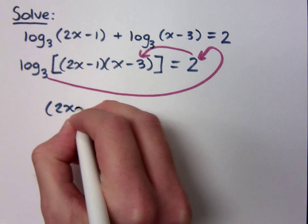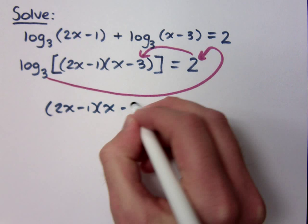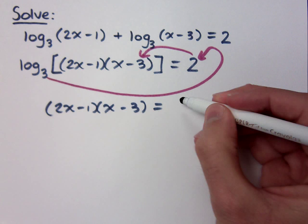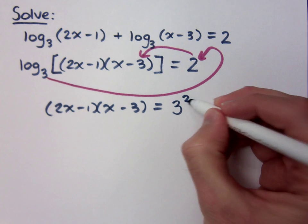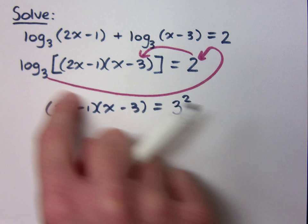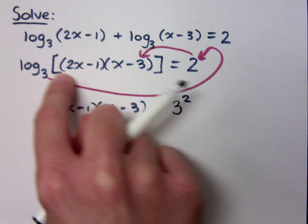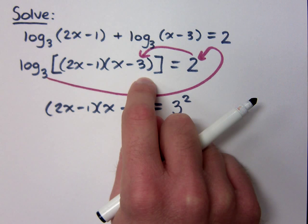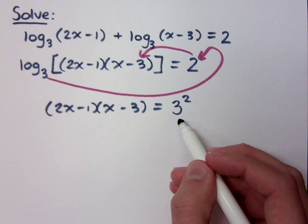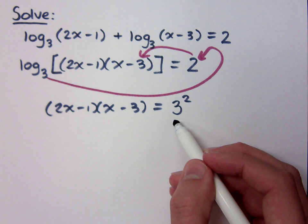So that means that 2x minus 1 times x minus 3 is equal to what? Want to do the loopy-loo? That equals 3 squared, right? That was the way we did the loopy-loo, when I was going from a logarithmic to an exponential form. 3 squared equals what was inside here. Now, look at this. We know how to solve this, right? It's quadratic. Or it will be when we get there.